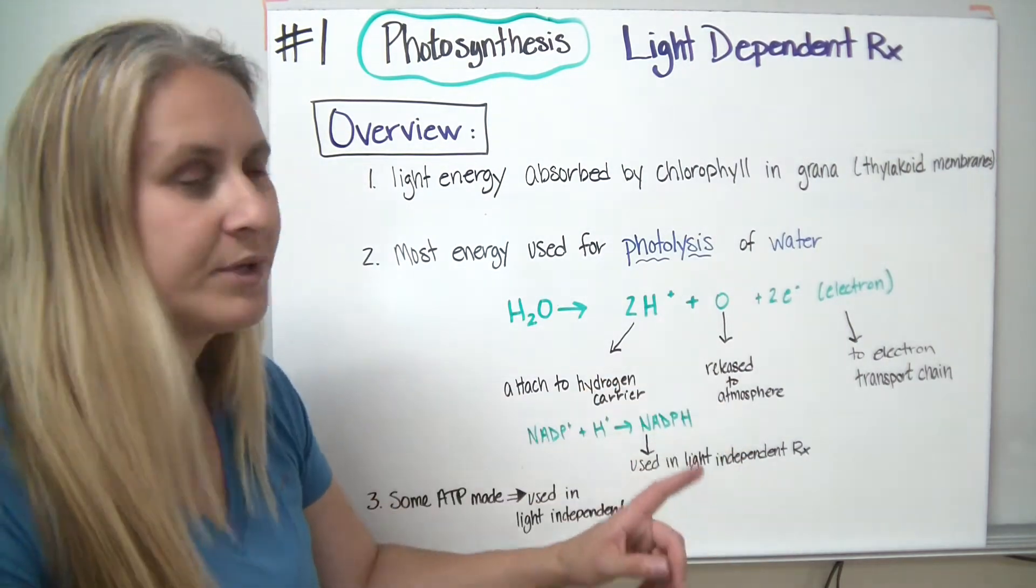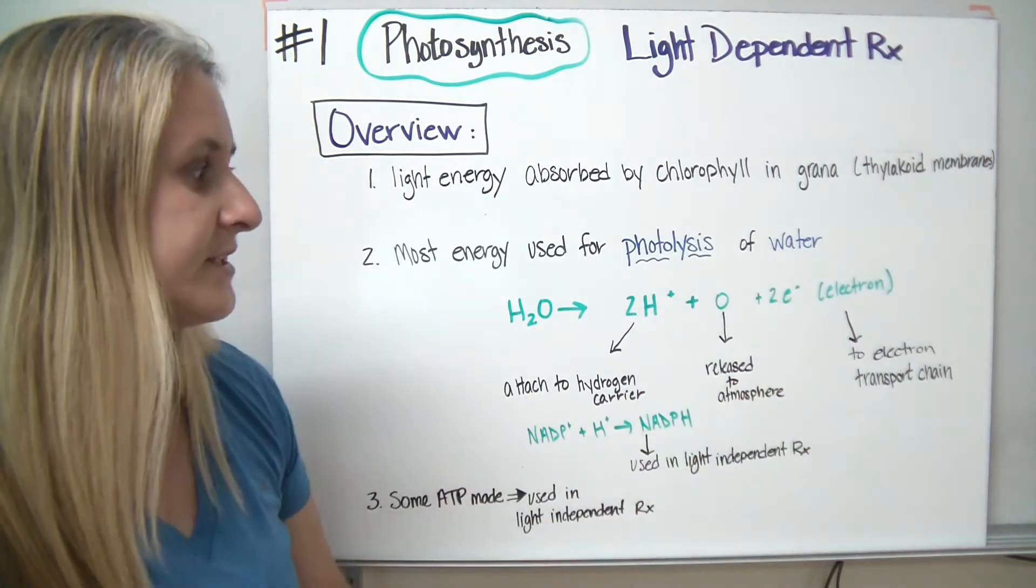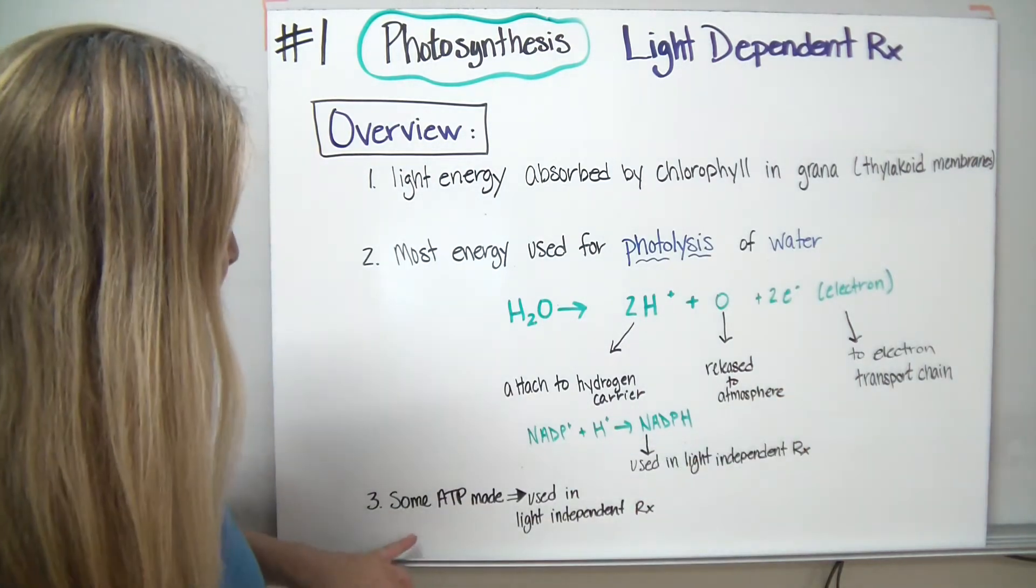The oxygen, remember, gets released into the atmosphere through the stomates in the lower epidermis. And we said the electrons are entering the electron transport chain.